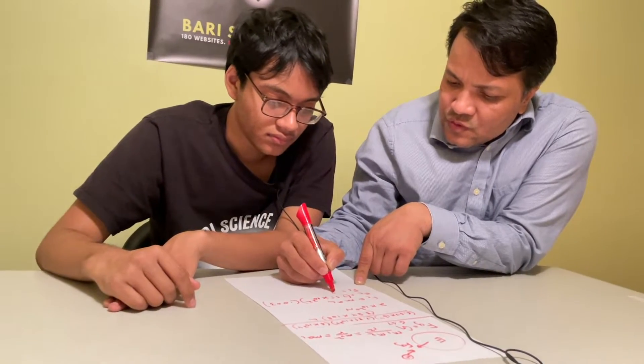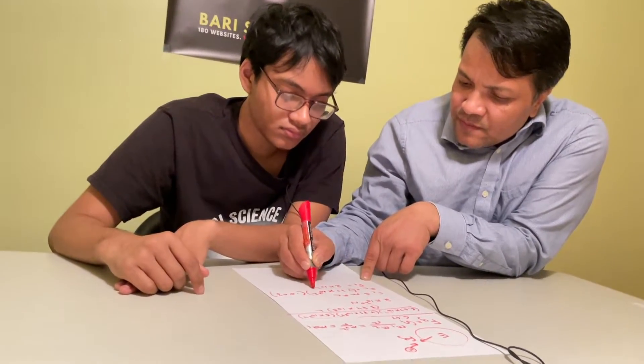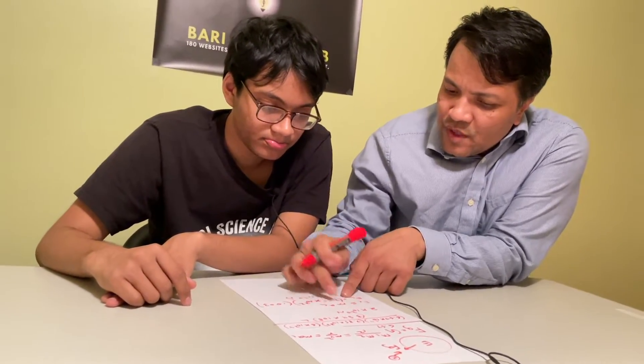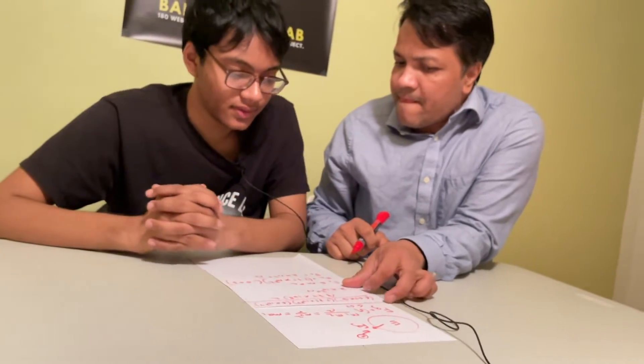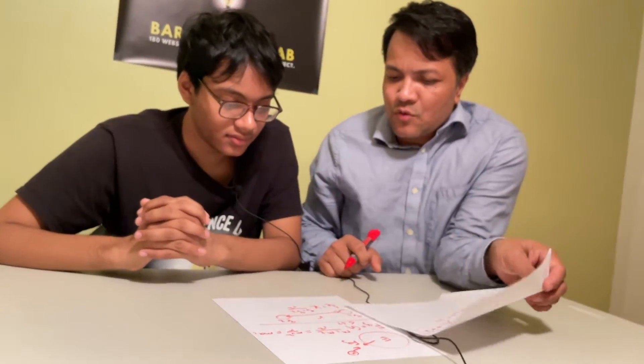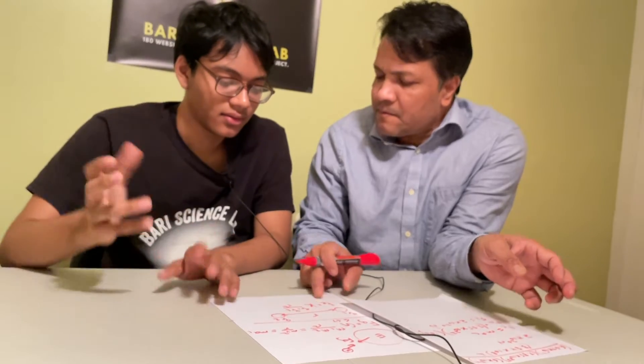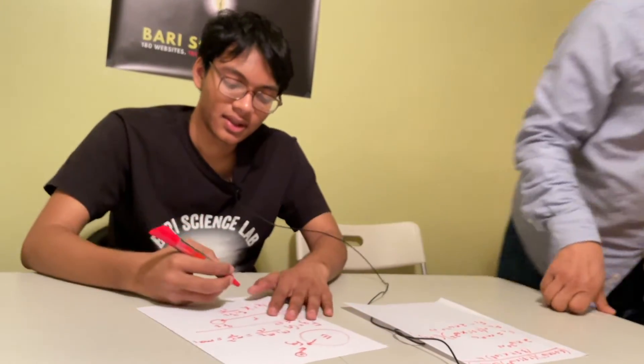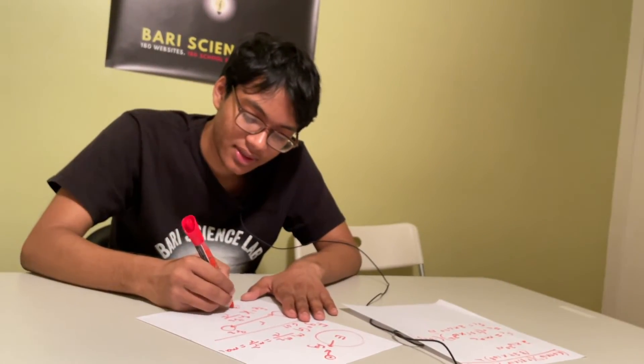So both ways you get the same answer. I see, okay, thank you teacher. Would you be able to do this one? Yeah, so k is gonna be 9 times 10 to the nine.